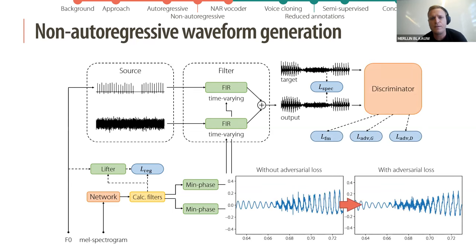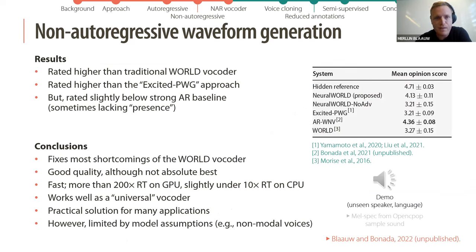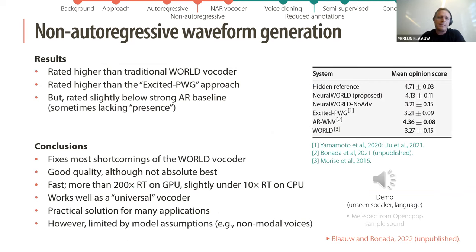These adversarial losses are especially useful for recovering from vocoder errors. The results show that this vocoder is rated higher than the traditional WORLD vocoder, also rated higher than the excited parallel WaveGAN approach — a typical TTS baseline adapted to singing — however it is rated slightly below a very strong autoregressive baseline, sometimes lacking a little bit of presence.